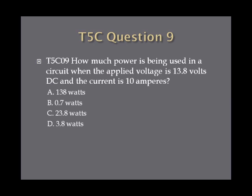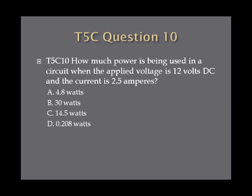Question nine: How much power is being used in a circuit when the applied voltage is 13.8 volts DC and the current is 10 amperes? A. 4.8 watts. B. 30 watts. C. 14.5 watts. Or D. 0.208 watts.